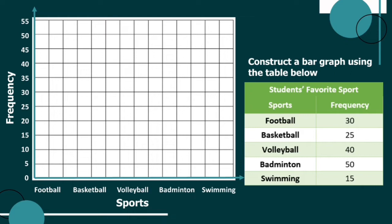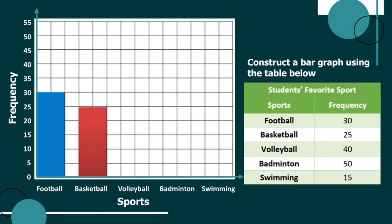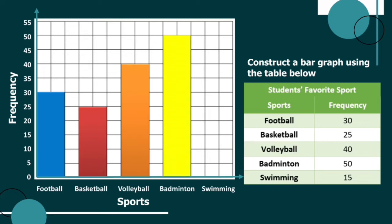The length or height of the bar needs to be exact to what value it represents in the table. For football, we have 30; basketball, we have 25; volleyball, we have 40; badminton, we have 50 students; and lastly, swimming, we have 15 students. Don't forget to put the title 'Students' Favorite Sport.'